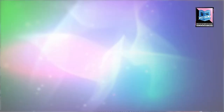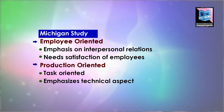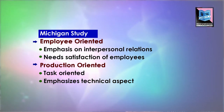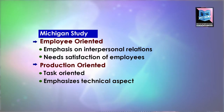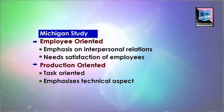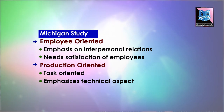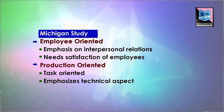The next school is the Michigan school. The Michigan school simultaneously carried out studies on the behavioral aspect. They divided leaders into two types: employee-oriented and production-oriented. At the beginning they placed them on a single continuum.